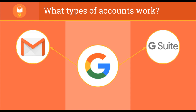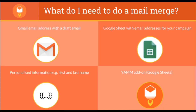This includes those using Gmail, G Suite Basic, Business, Education, and Government. To do mail merge in Gmail, you need the following: a Gmail address with a draft email you'll use for your mail merge, a Google Sheet that contains the email addresses of your campaign targets, and if needed, their personalized information like name, function, etc. And lastly, the YAM add-on within Google Sheets.